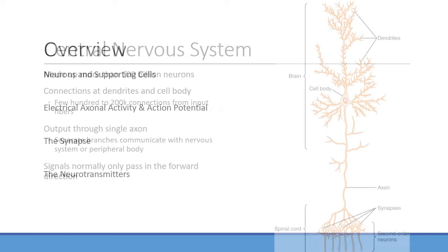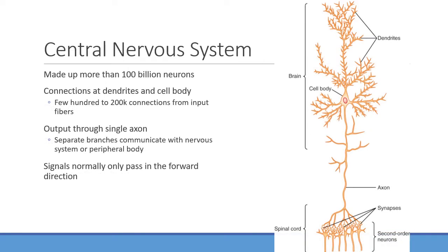Looking at the central nervous system, it's made up of over a hundred billion neurons. The typical structure of a neuron includes the cell body, the axon — which is where signals travel down — the synapse at the end, and dendrites that receive input from many other synapses. All those signals come into the cell body and affect the axon, which can then be stimulated or inhibited.